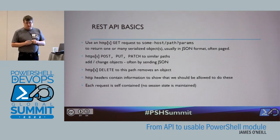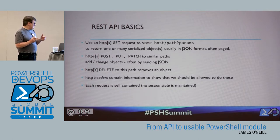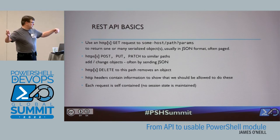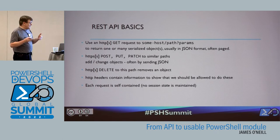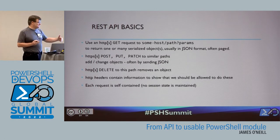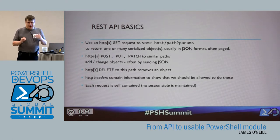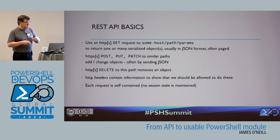Some quick basics on REST APIs. We kind of take REST APIs for granted these days, but to get everybody on the same page: typically we're sending a GET request if we want to read information — going to some host and some string of parameters and we get an object back, or multiple objects. The object comes back in some sort of serialized text form; usually that's JSON but it could be any format. And if there are a lot of objects coming back, they're usually paged in some way.